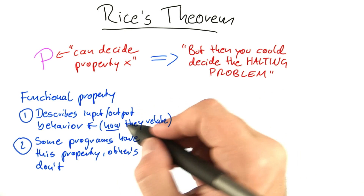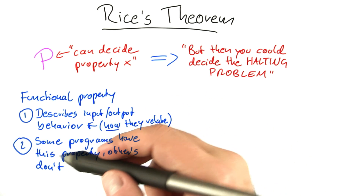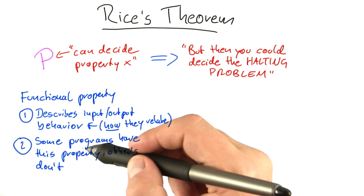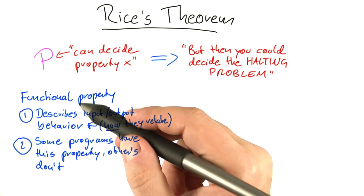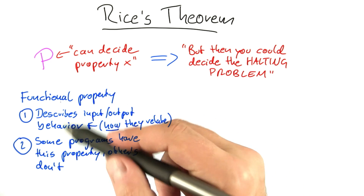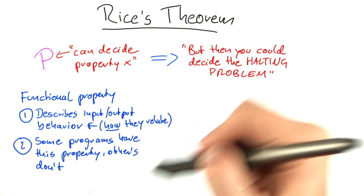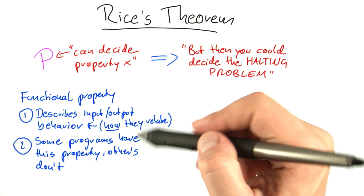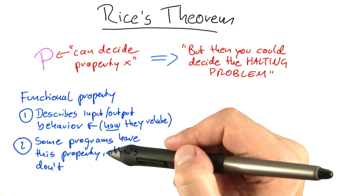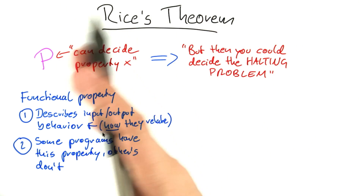Not, for example, how much time we need or something like that. And the second property is that there must be some programs that have this property and other programs that don't have this property. So when you look at all possible computer programs, some of them will have this property and others won't — so that it can basically distinguish between the two.